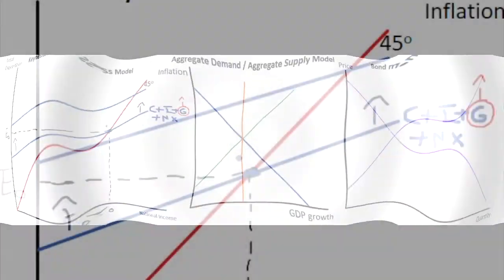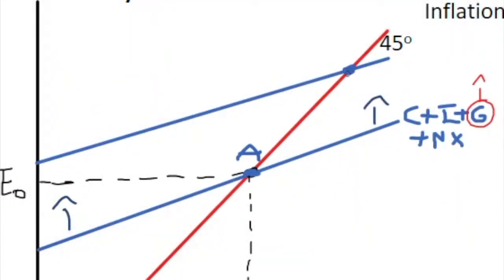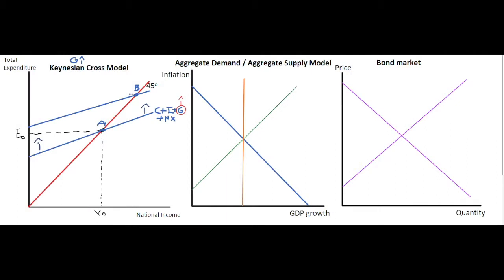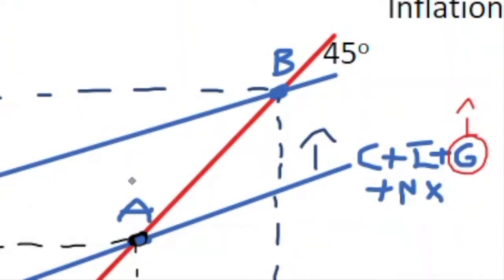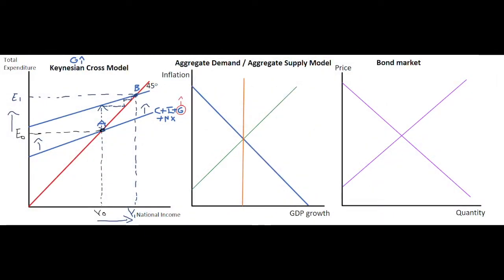With an increase represented for expansionary fiscal policy, we get a new equilibrium point. We start off at point A and end up at point B. Point B shows that increased expenditure is having an impact: total expenditure E1 has increased, and national income has also risen to Y1. The initial increase in government spending has increased even more than the initial spend because of the multiplier effect, which has raised national income by a higher level than the initial expansionary fiscal policy.